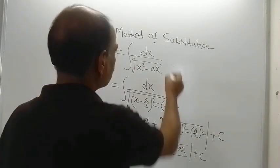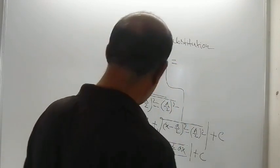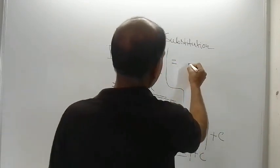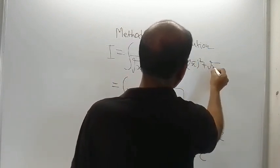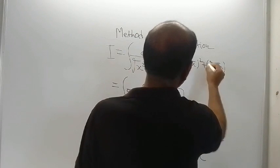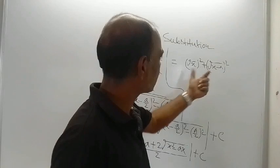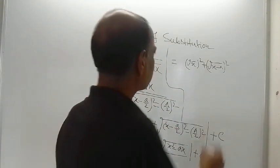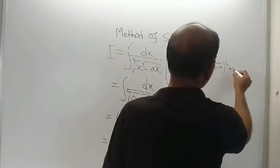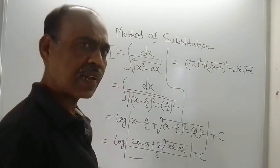Now this 2x minus a, I am showing somewhere here. This 2x minus a can be written as root x whole square plus root of x minus a whole square. This is what actually x plus x minus a, that is 2x minus a. So this 2x minus a is this one, and this can be written as 2 into root x into root of x minus a.